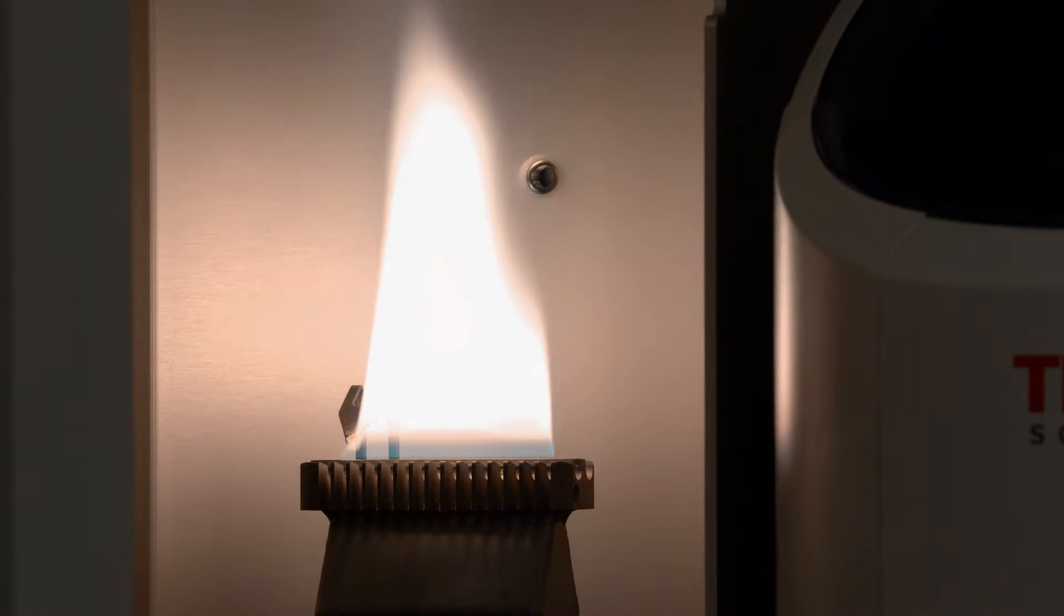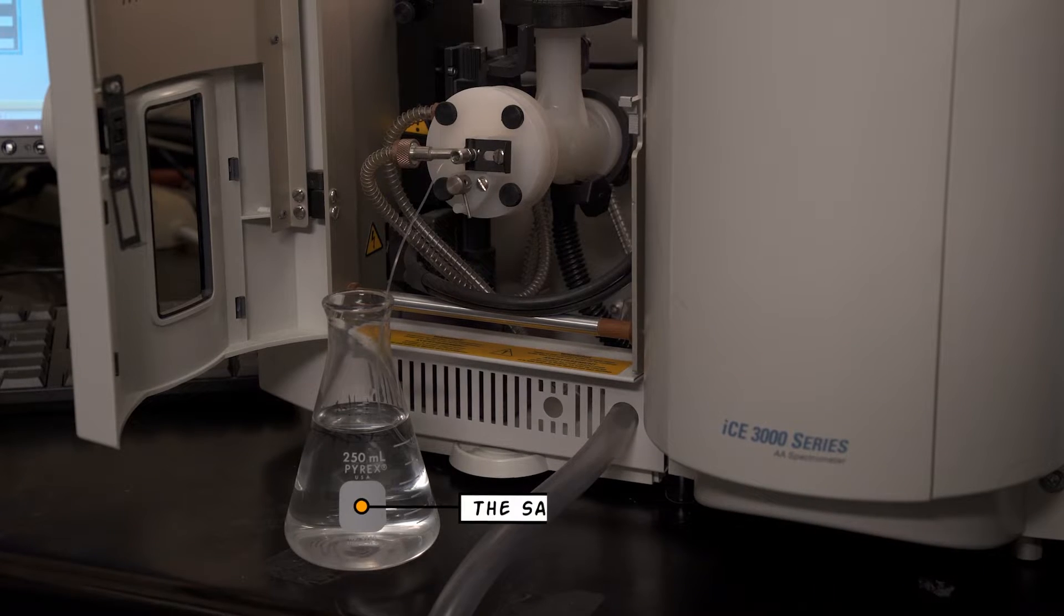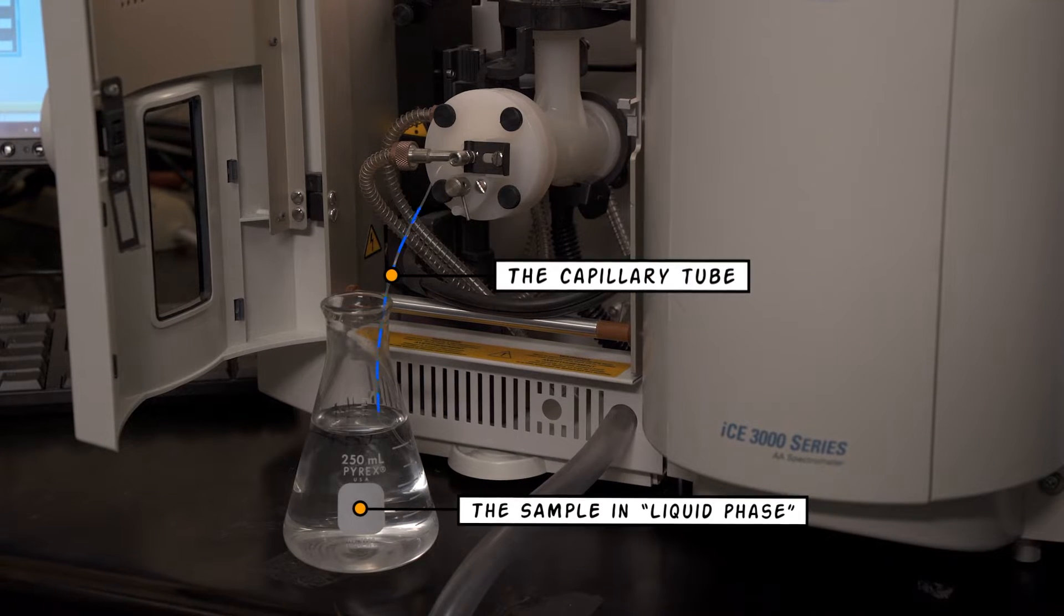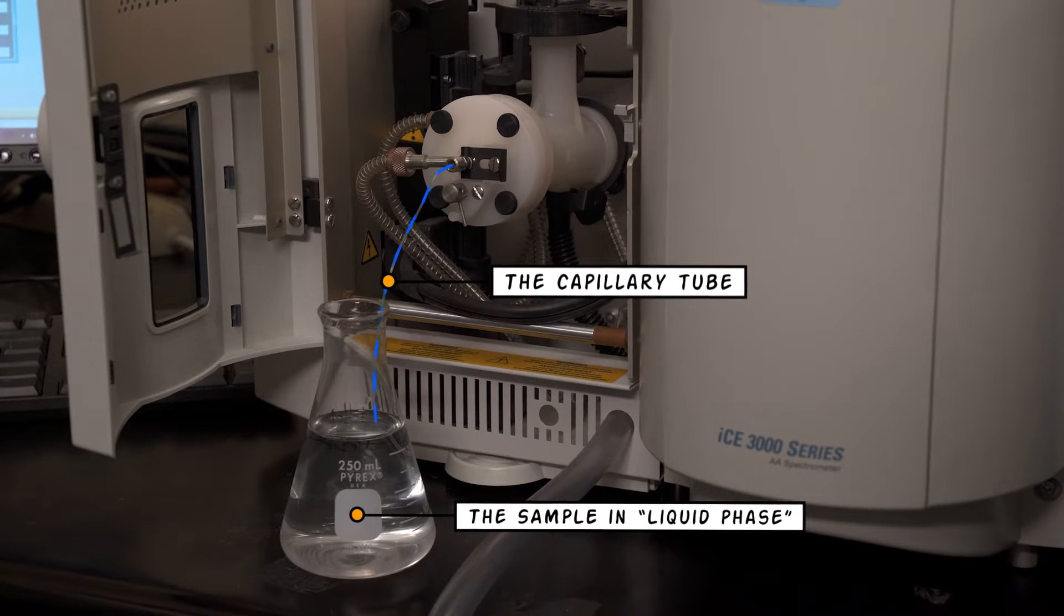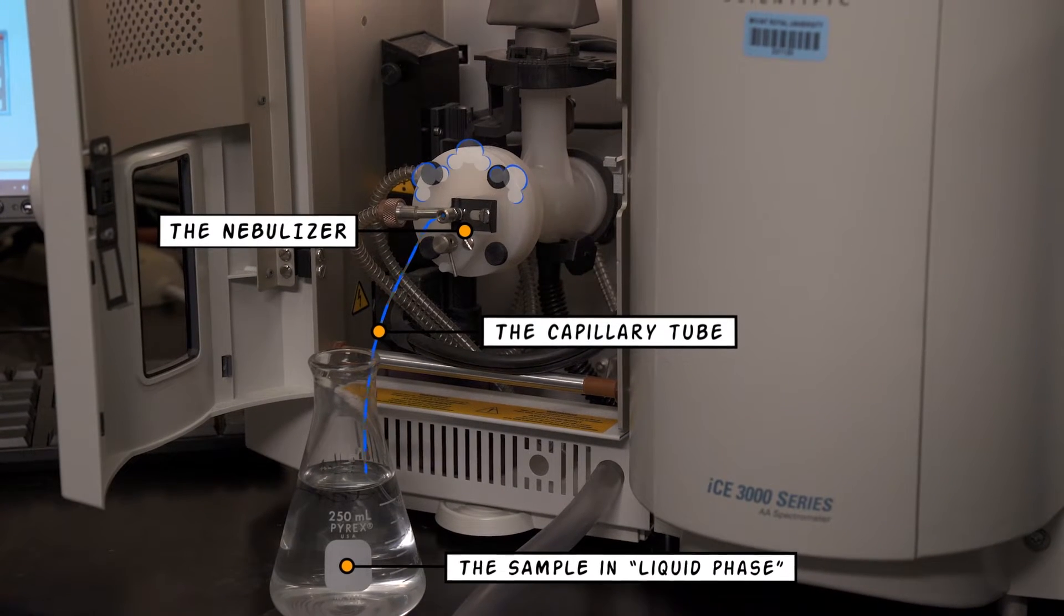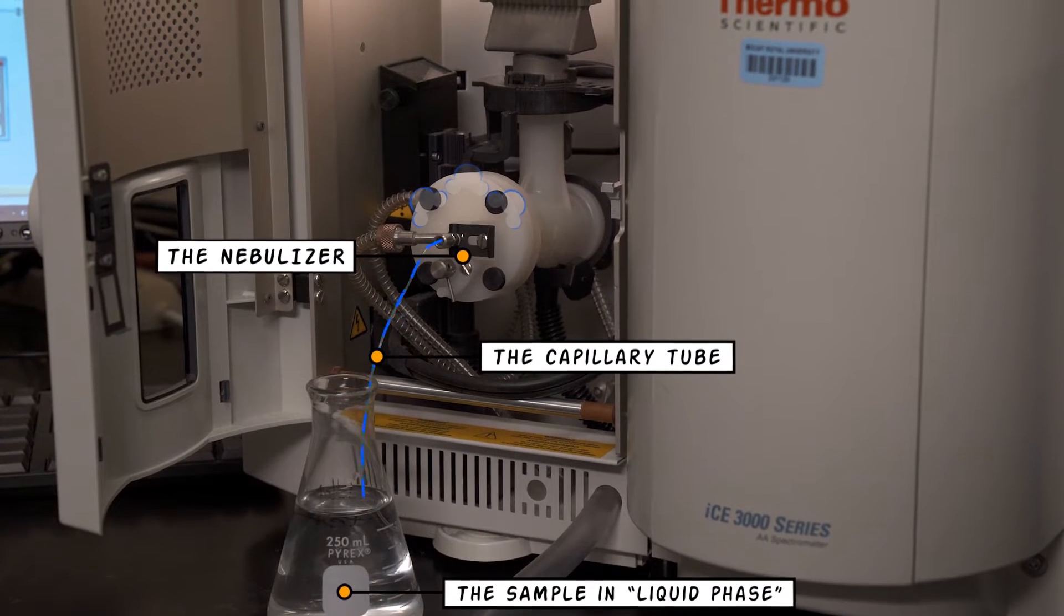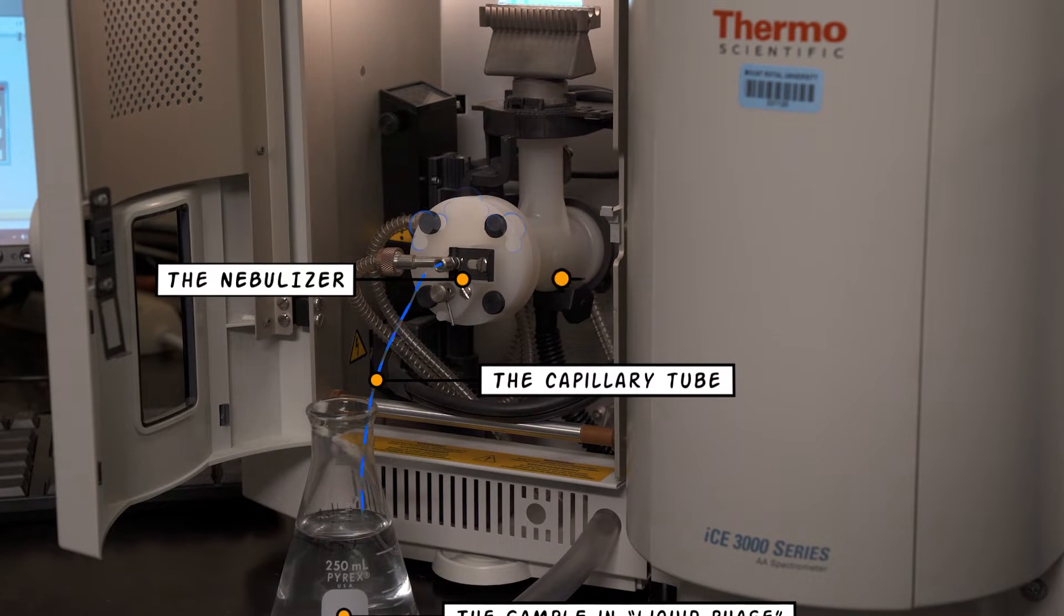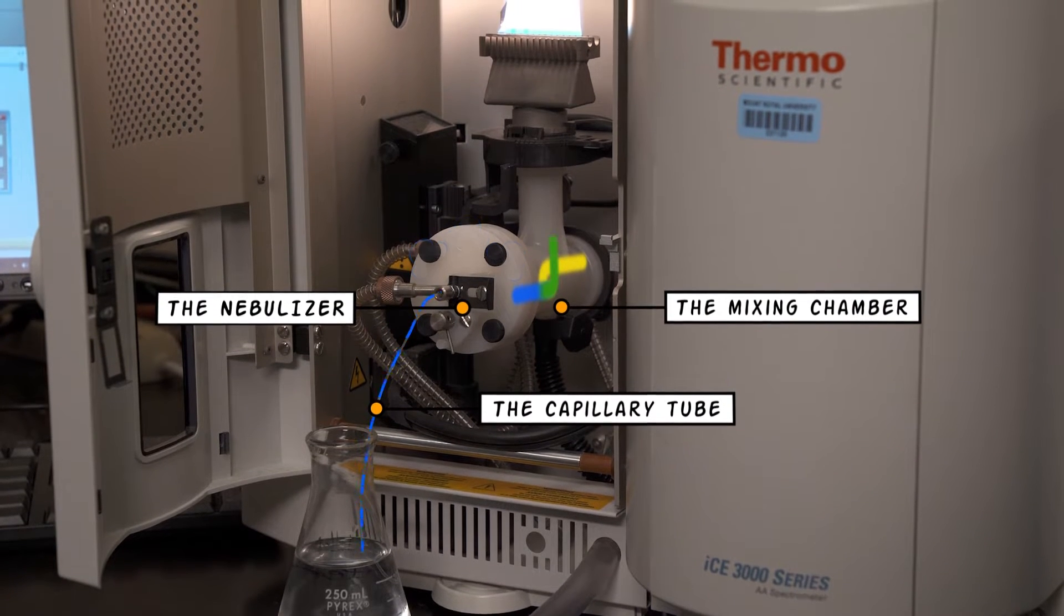The water sample containing calcium begins its journey in the liquid form. It is sucked into the machine through this capillary tube, which looks like a straw. The sample then moves through the nebulizer and it is converted into a mist, like that that comes out of a puffer for asthma.